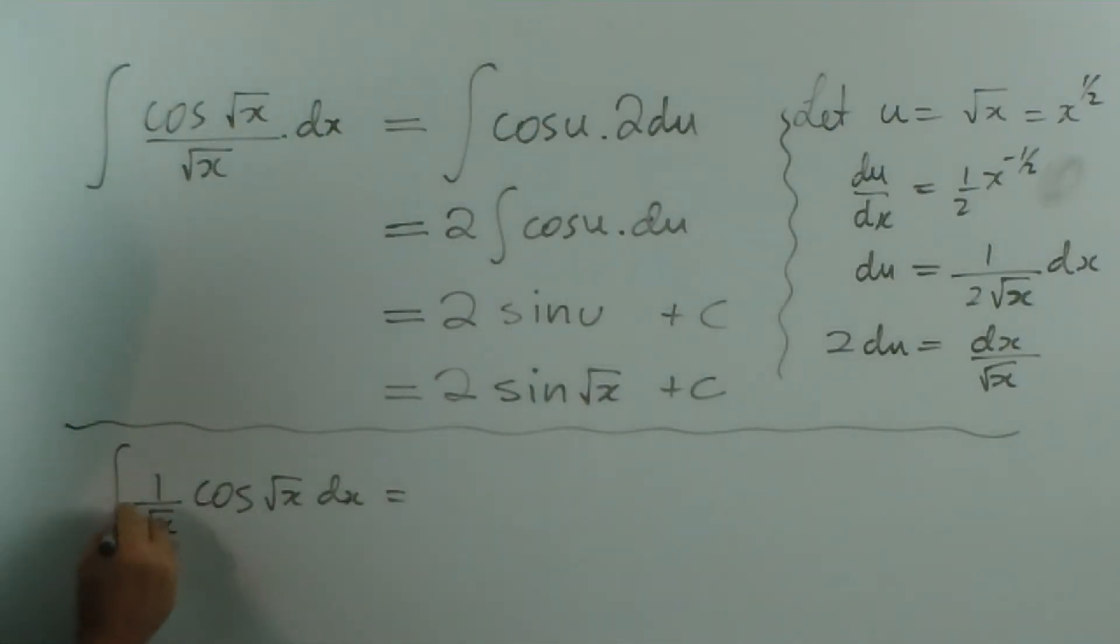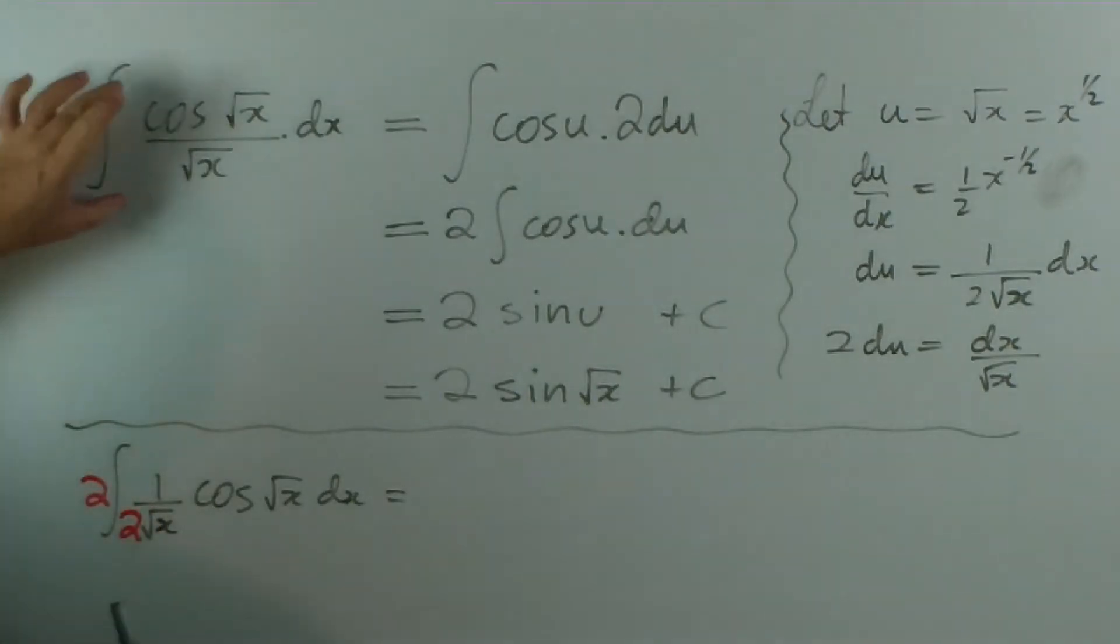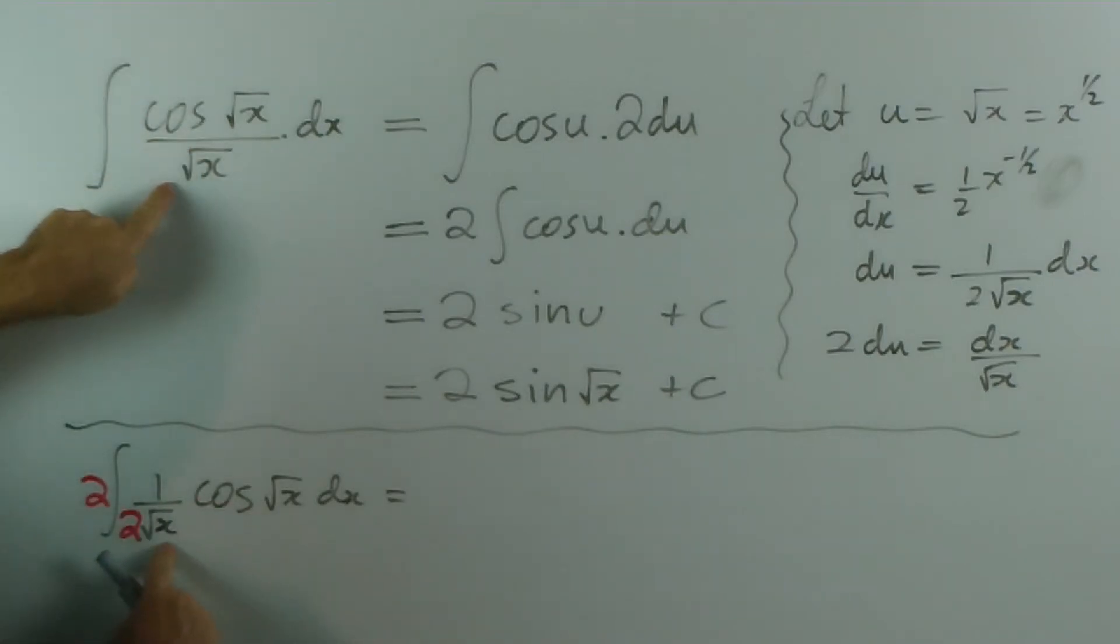So we would have had the same integral in black, the cos root x, the 1 over root x, the dx. But by recognising the derivative of the square root of x is 1 on 2 root x, which we did over here anyway.